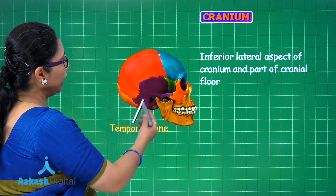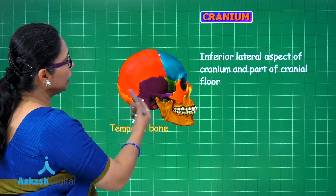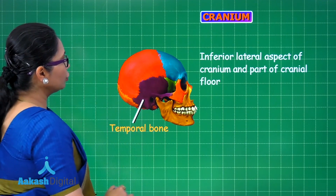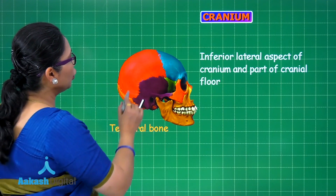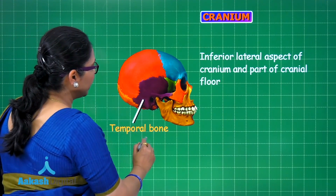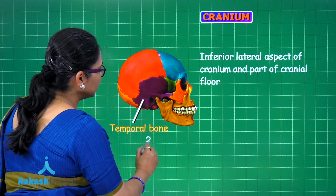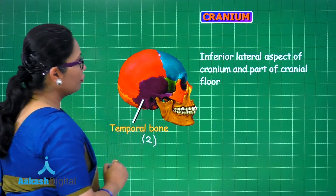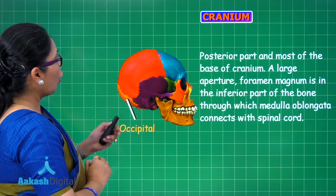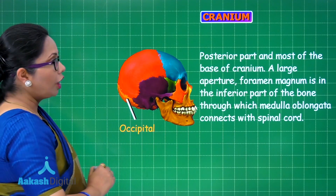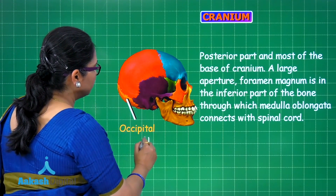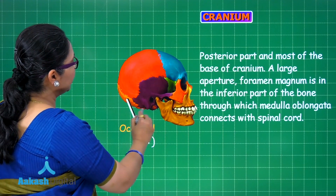The temporal bones are at the inferior lateral aspect of the cranium and form part of the cranial floor; within them the internal ear is also protected. These are paired bones, present on both left and right sides. The occipital bone is a single bone forming almost the base of the cranium.